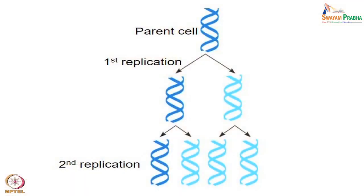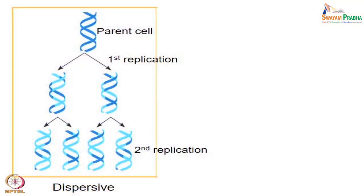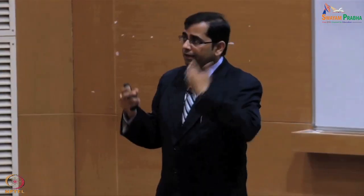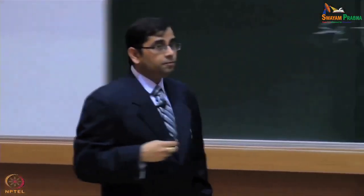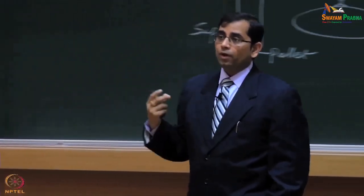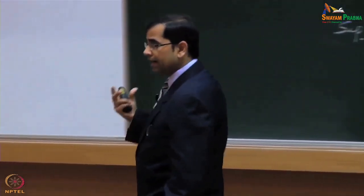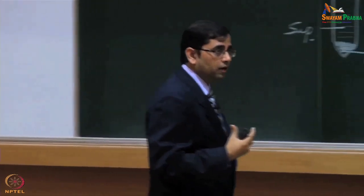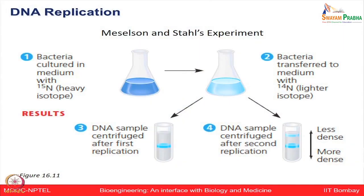In conservative replication, one DNA always remains as the original parental DNA even after first and second replications. The dispersive model says a mixture of both strands keeps segregating after each replication. To resolve which model is correct, scientists Meselson and Stahl performed a very elegant experiment.